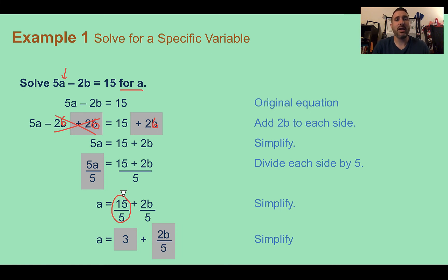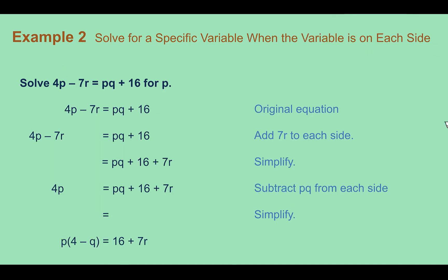Example two: solve for a specific variable when that variable is on each side. So solve 4p minus 7r equals pq plus 16 for p. Going through, if you notice that the variable that you want to solve for is there multiple times, so either on the same side or on opposite sides as we see here, you need to get them both on the same side so that you can use the distributive property. So the first thing I'm going to do, I see this 4p on the left and it's with minus 7r, so I'm going to add 7r to both sides so that way I just have that 4p on the left.